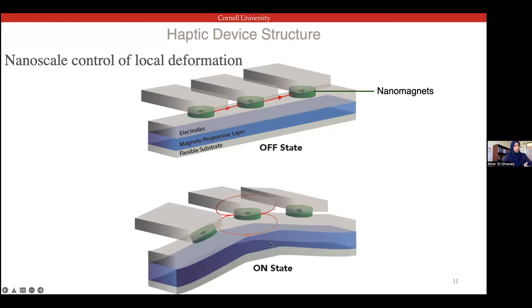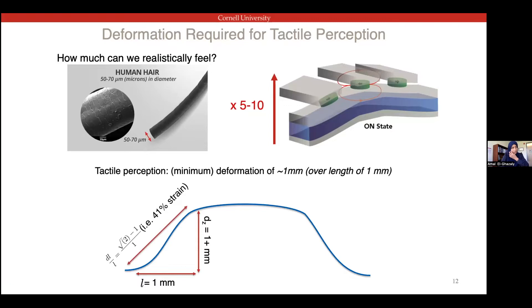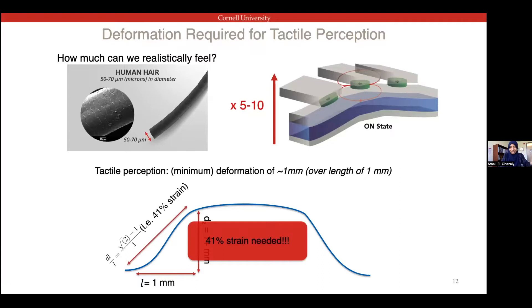This is a very challenging vision, but we approach it step by step, looking at the different requirements of each layer. First, the magnetic elastomer layer — in order for it to deform and actually provide enough sensation to our hand, we need a certain amount of deformation. If you rub a hair between your hands you can feel it, but it's not much of a sensation. My estimate is we probably want around five to ten hair widths, so ideally we want to aim for a millimeter deformation out of the plane, over a distance of one millimeter in-plane. That gives a 41% strain in the magnetic layer.